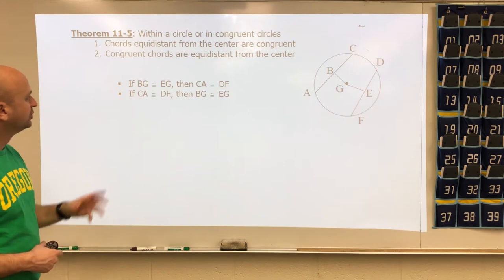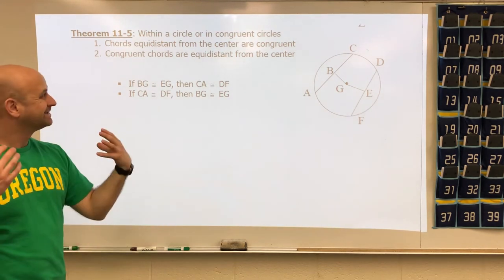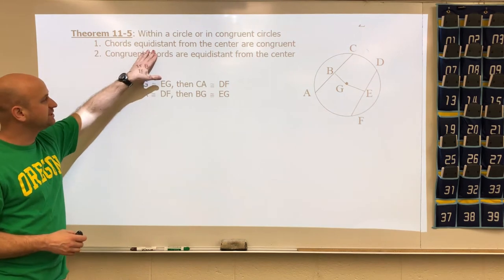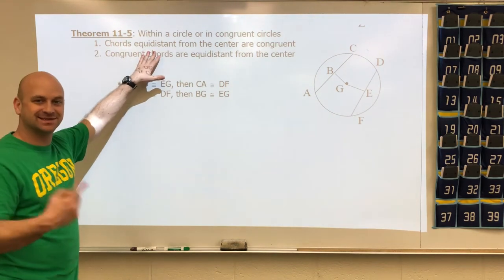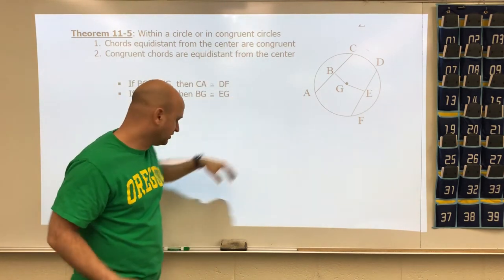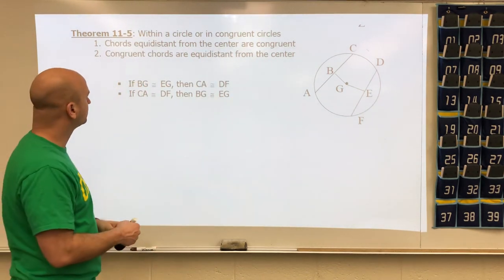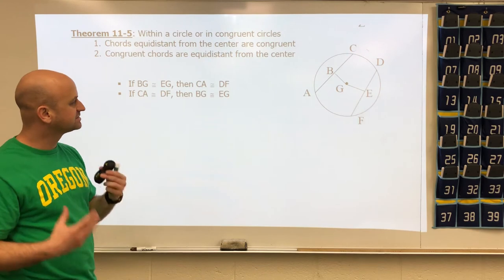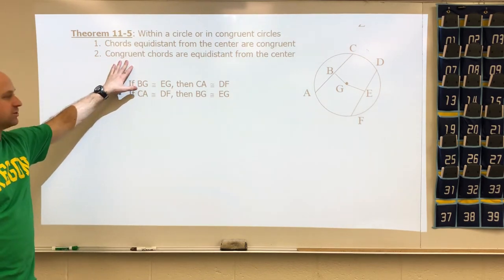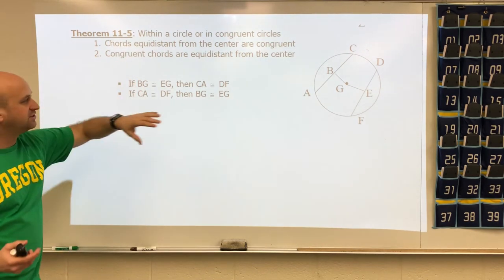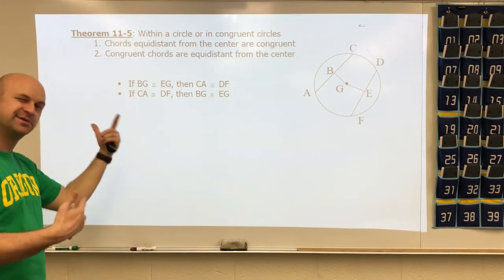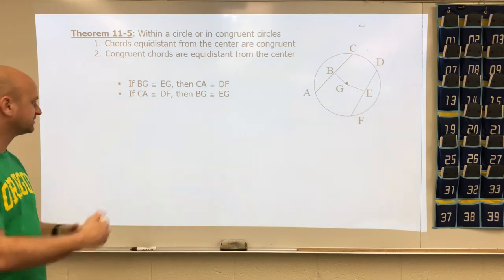There's a new theorem in this section: within a circle or congruent circles, two chords equidistant — meaning the same distance — from the center are congruent. Conversely, if you have congruent chords, they are equidistant from the center. It says the same thing but in different directions of wording.